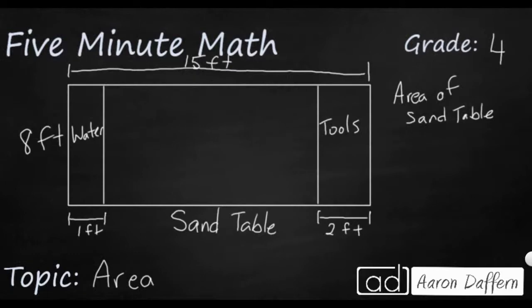Let's look at another problem. So we have a diagram here, and this is showing us a sand table. And we're trying to find the area of the sand table. Now the entire length of the entire contraption is 15 feet here, and the width is 8 feet. But you see that the sand table is just this inner part right here. This is where the sand would go.